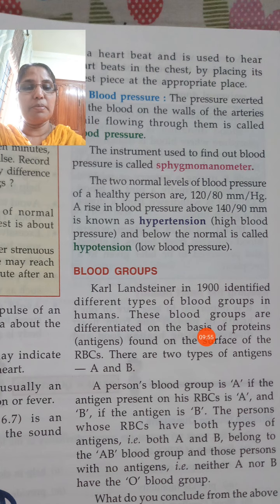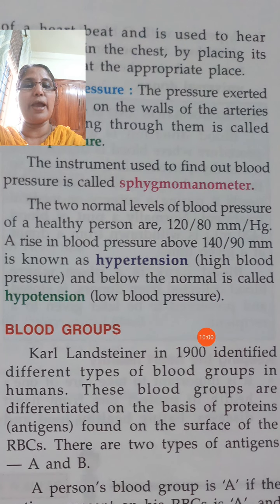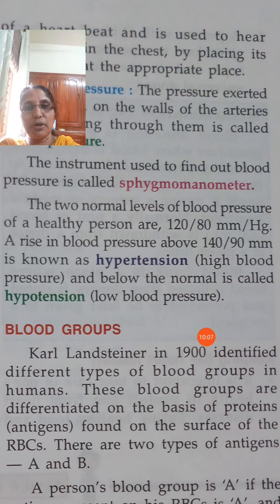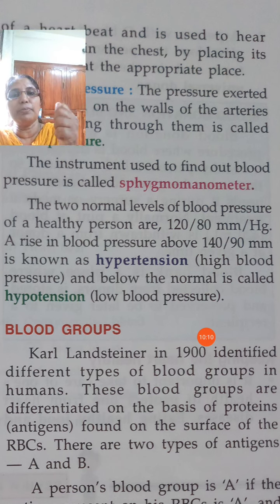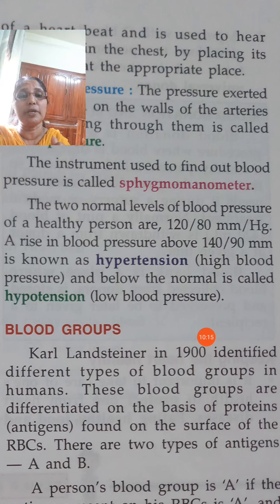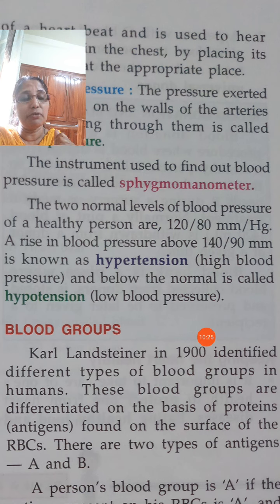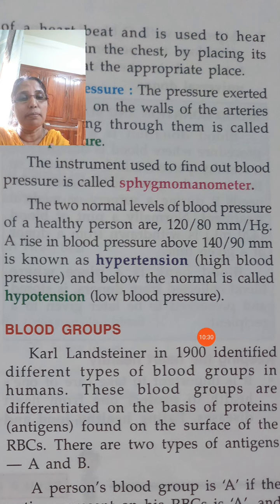We can measure blood pressure using the instrument called the sphygmomanometer — it uses a cuff, a pump, and a gauge. The blood pressure of a healthy normal person is 120/80.